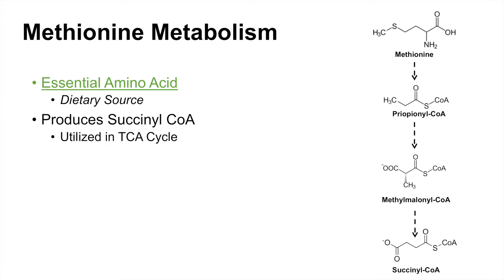Here's a brief overview of the methionine metabolism pathway. We see that methionine eventually produces propionyl-CoA, which then leads to methylmalonyl-CoA, which eventually leads to succinyl-CoA. We're going to discuss the methionine metabolism pathway in detail in the next slide.